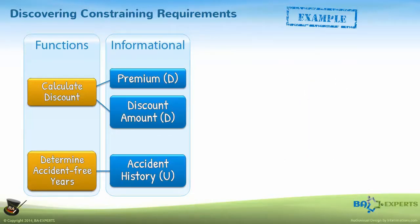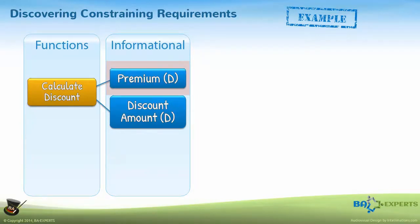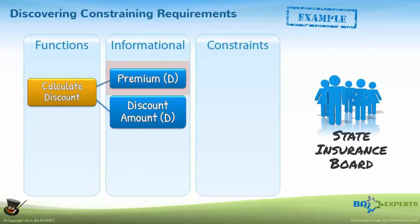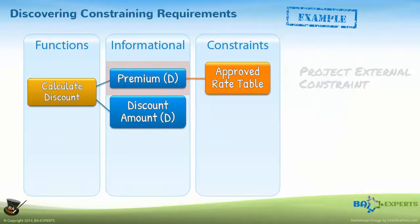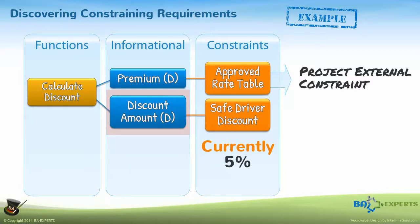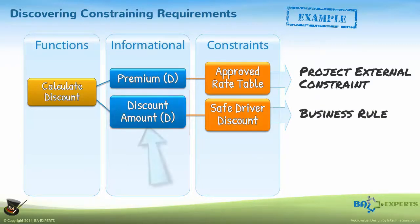As you dig deeper, you discover that the company cannot change the data element premium without the approval of a state insurance board. That means there is an external constraint under the control of a regulatory agency — the premium has to come from an approved rate table. Next, we are informed that the discount amount is currently 5%, but is subject to change by the business community. This is an internal constraint, also known as a business rule, affecting the data element and the functions that create it.